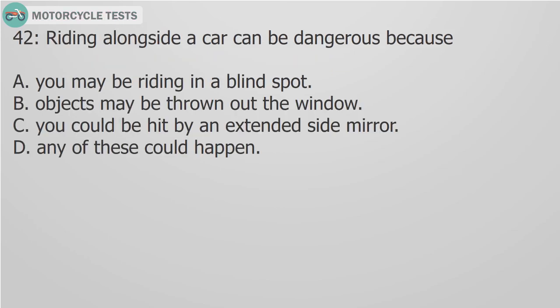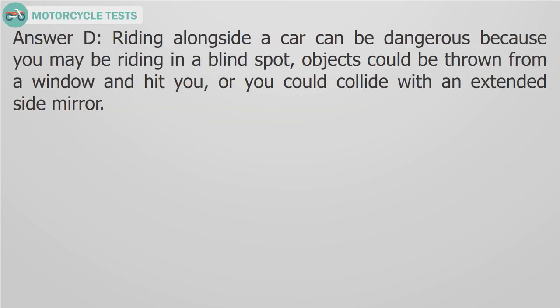Question 42. Riding alongside a car can be dangerous because: A. You may be riding in a blind spot. B. Objects may be thrown out the window. C. You could be hit by an extended side mirror. D. Any of these could happen. Answer D. Riding alongside a car can be dangerous because you may be in a blind spot, objects could be thrown from a window and hit you, or you could collide with an extended side mirror.